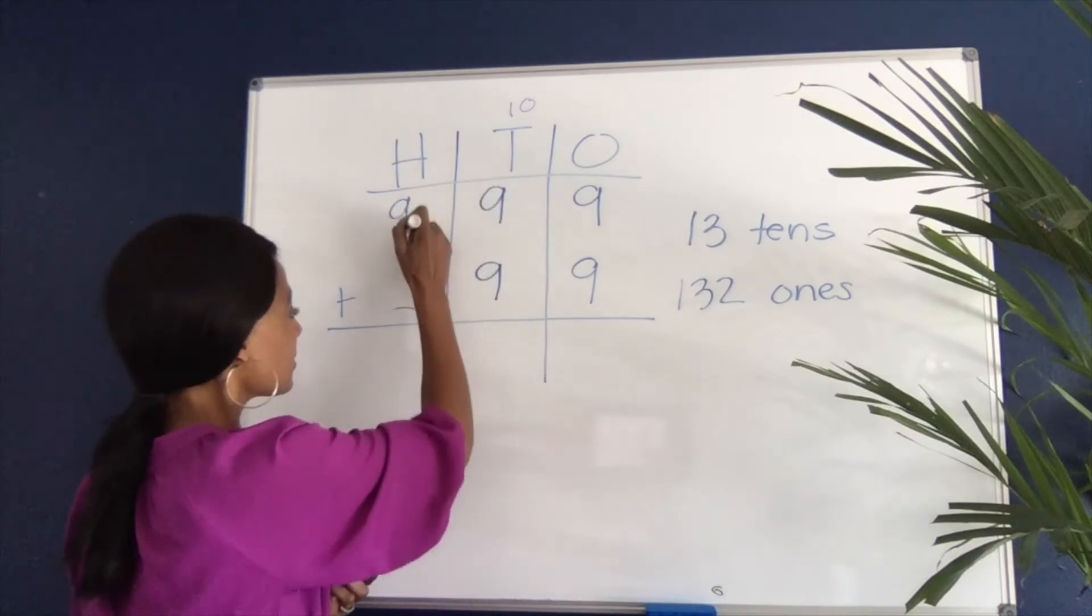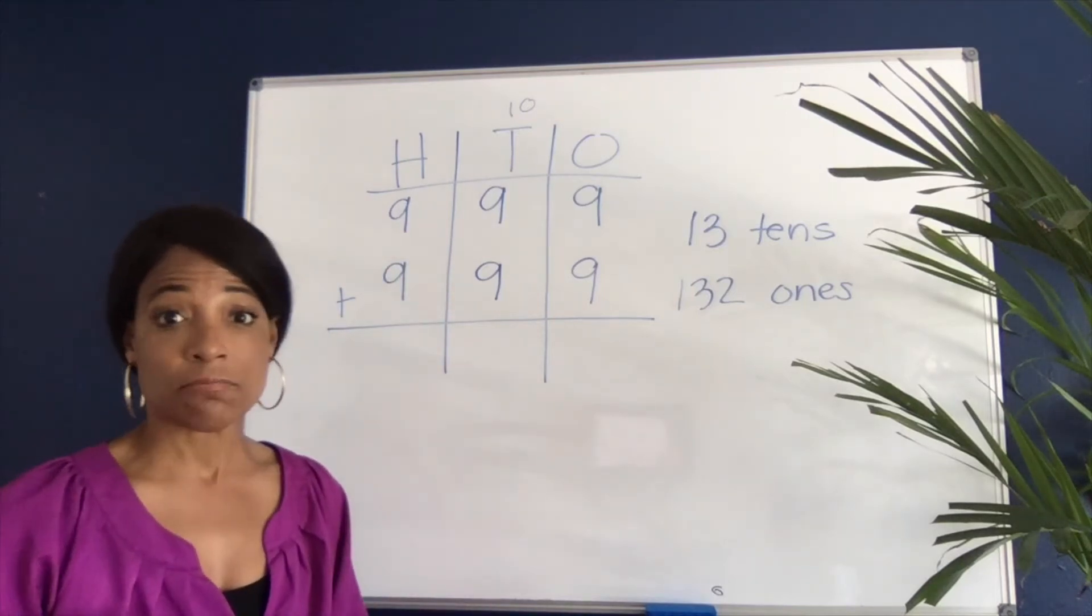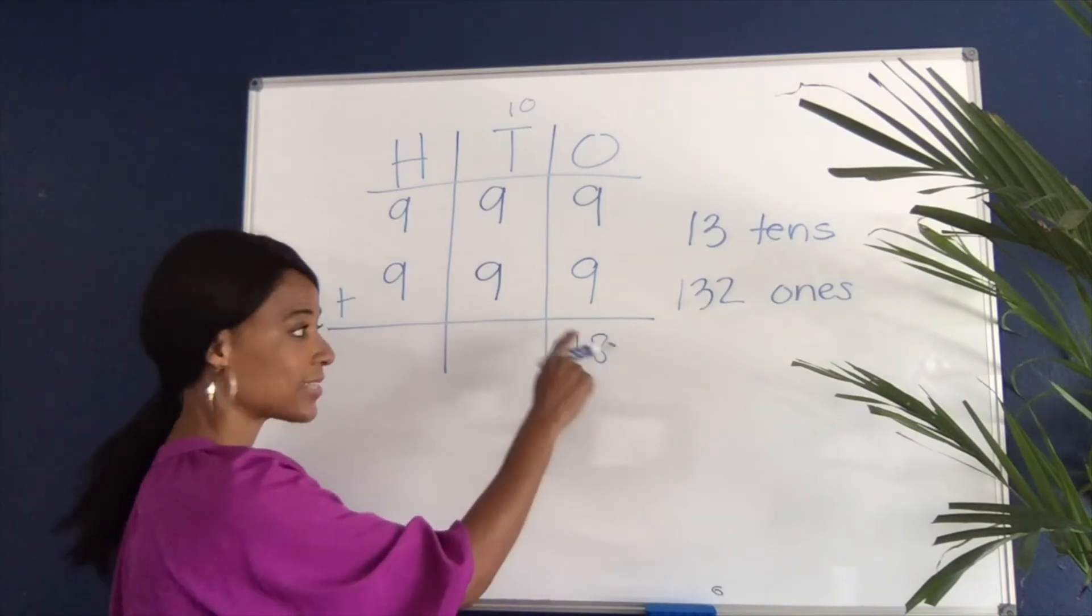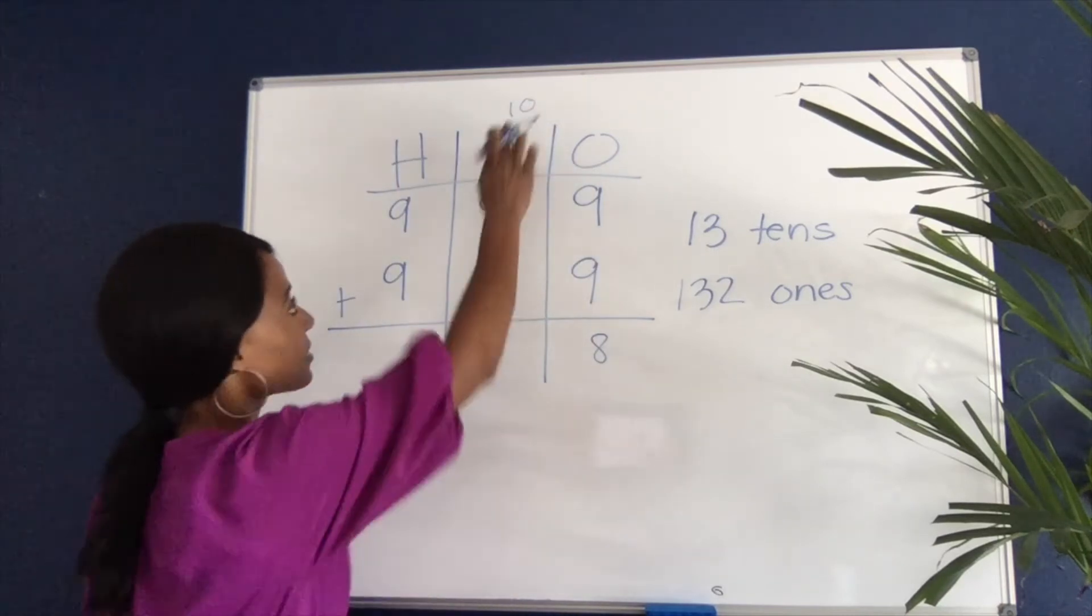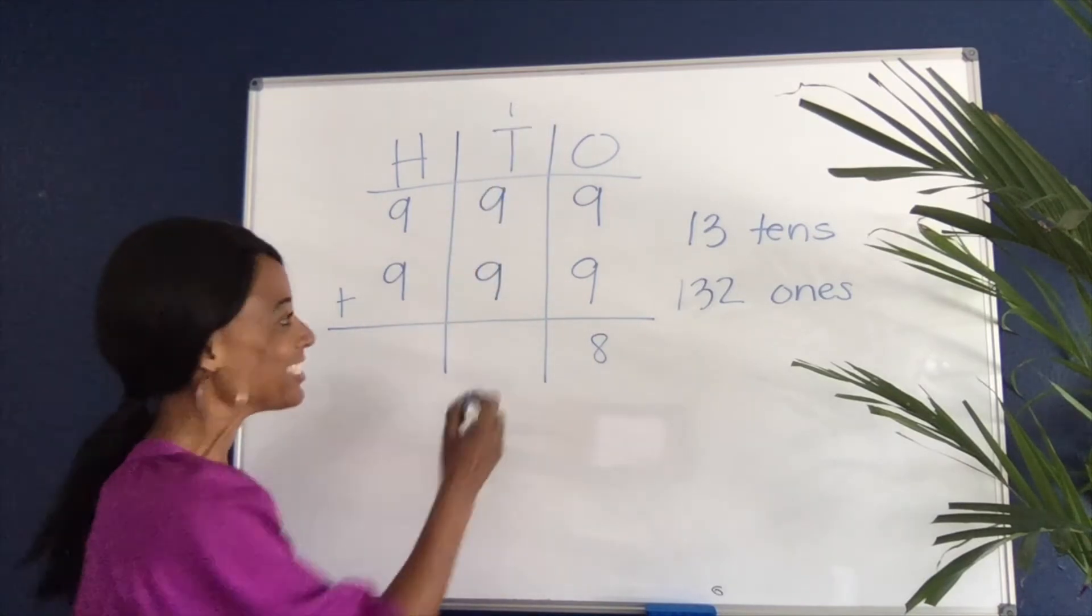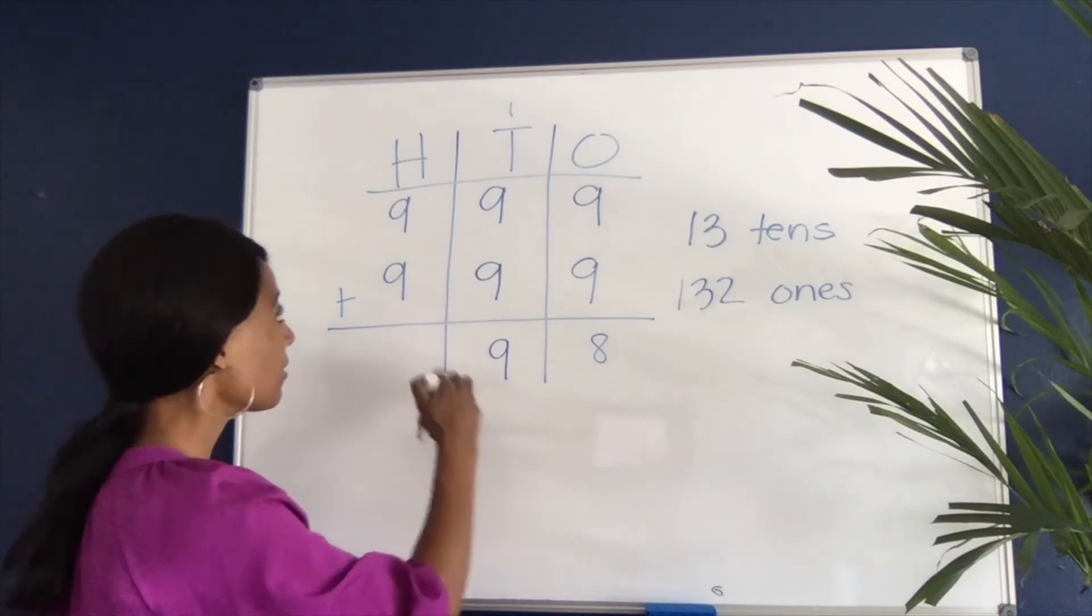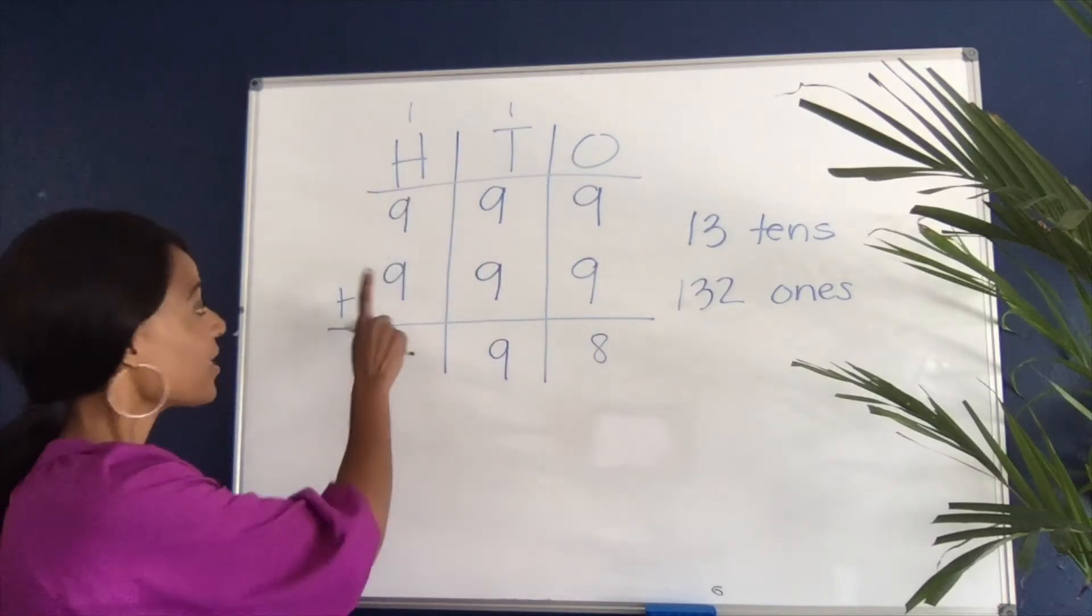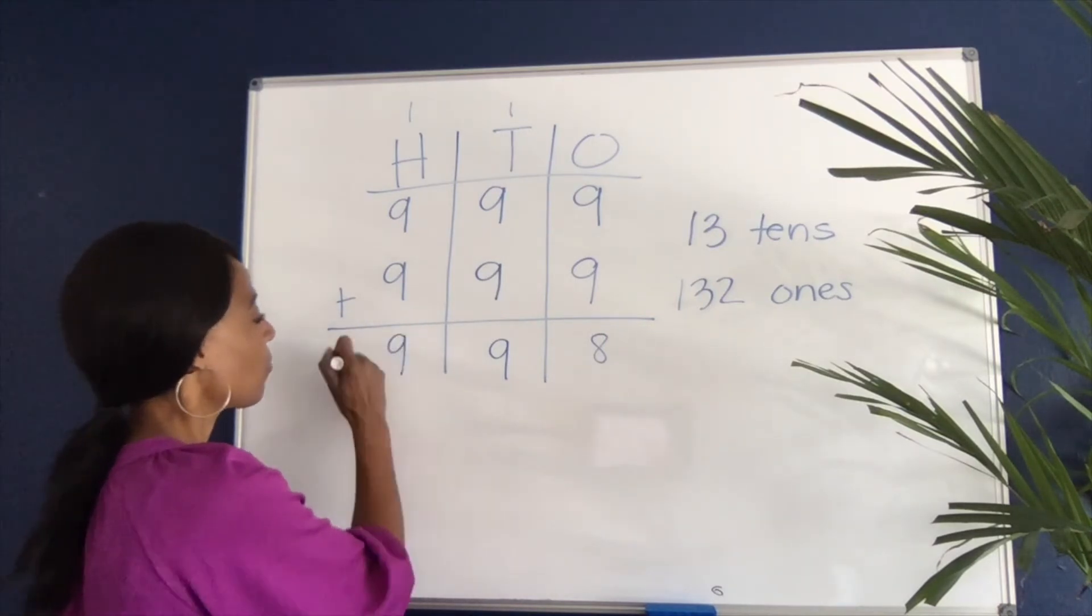When students use this method, the highest they ever have to count to is 18. In this example they would make this 18, they would carry the 10 over, and now they would add these up. But usually it looks something like this: 1 plus 9 is 10, and then 10 plus 9 is 19. They would say carry the 1, but that's actually a group of 100. Then again they would add 1 to 9 to get 10, and then 10 to 9 to get 19. They're not carrying 100, they're carrying 1,000.